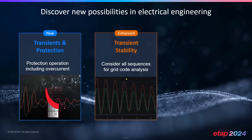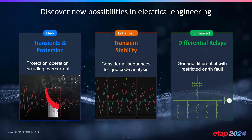We've also enhanced our dynamic or transient stability program to include all sequences, visualize the sequences, and plot them graphically on the one-line diagram as well as in our plots. Additionally, we've enhanced the way we model differential relays — ETAP now includes generic differential relays with restricted earth fault, which is a new capability, and you can also model vendor-specific differential relays, allowing you to move closer to the physical device along with its labels and tags.